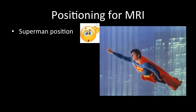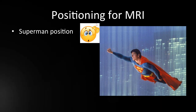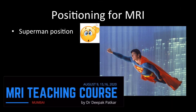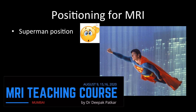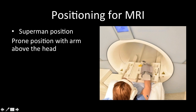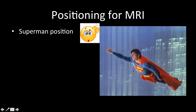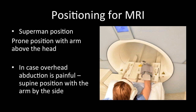The positioning for an MRI scan of the finger is called the superman position. This means the scan is done in a prone position with the affected arm above the head — it looks similar to a superman flying in the air, except for the flying part. In case overhead abduction is painful, say because the patient has a frozen shoulder, the patient can lie in the supine position with the arm by the side and the scan can be performed in that position.